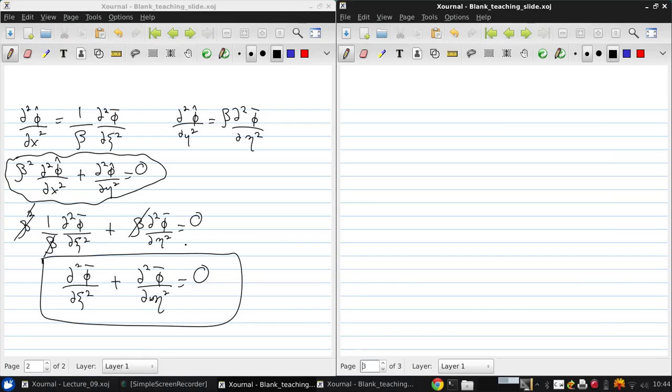Now this is a very exciting result because Laplace's equation was the governing equation that we had for incompressible flow. So what we really now have is an incompressible flow in the C-eta space, where the flow is represented by this potential phi bar, where phi bar is beta v hat.